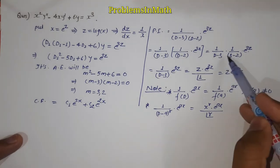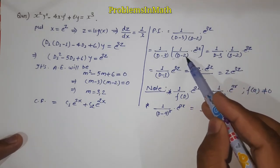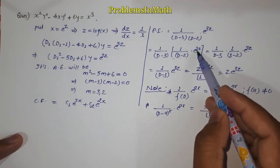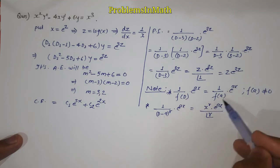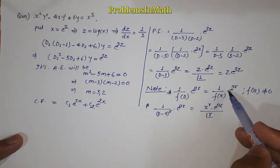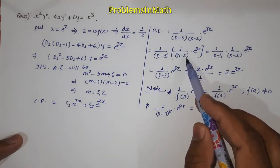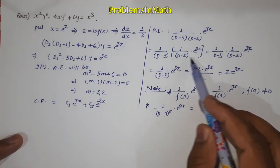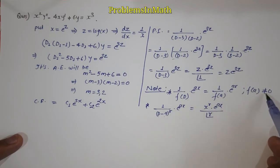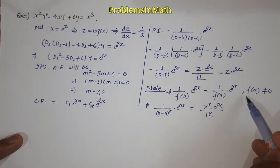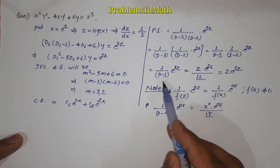So here if we take 1 upon (D minus 2) times e to power 3z, f(D) means put the value of a at the place of D. If we put 3, then 3 minus 2 is equal to 1. That means f(a) is not equal to 0, hence we can use this formula in this step.